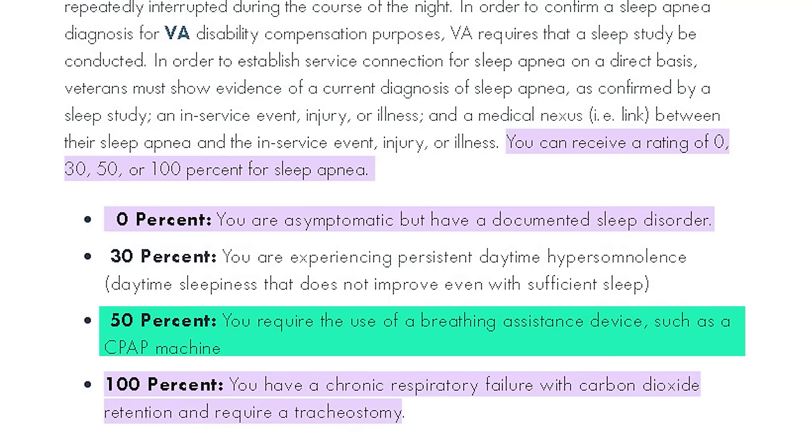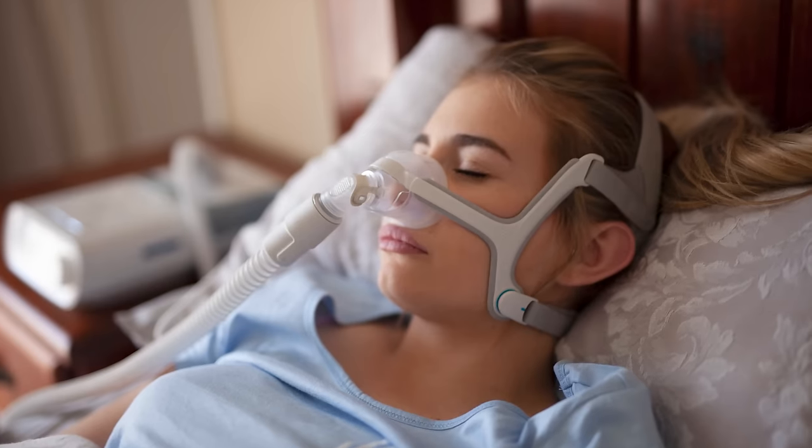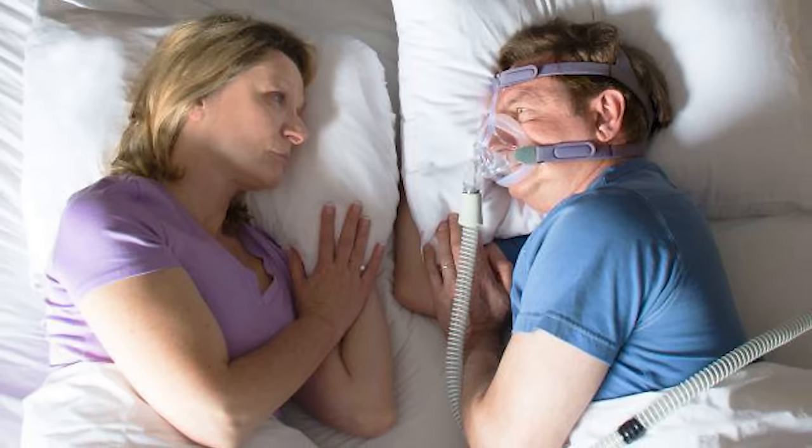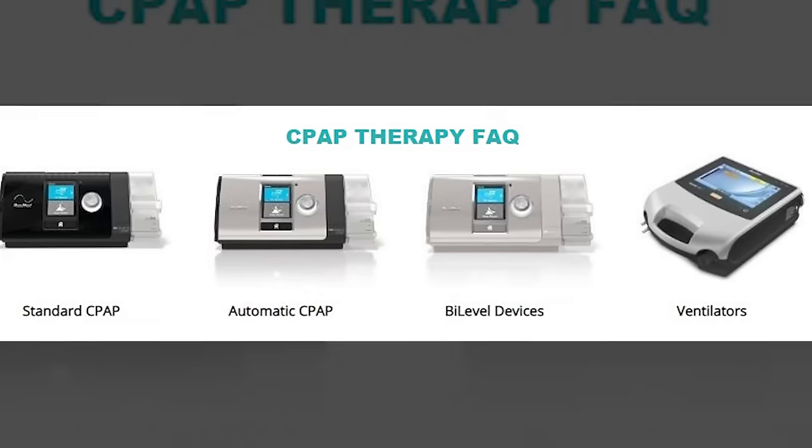A 50% rating says you require the use of a breathing assistance device, such as a CPAP machine. If you're prescribed a CPAP machine, that means you already have a diagnosis of sleep apnea, and the symptoms portion of that is covered by the prescription. The hard part with these claims is the nexus. The law says use of a breathing device such as a CPAP machine — there are other breathing devices and there are non-breathing devices.